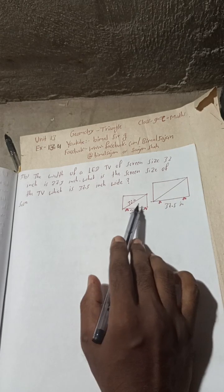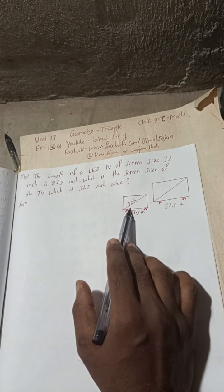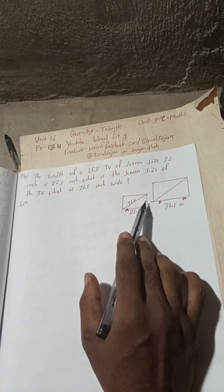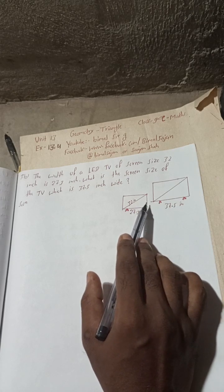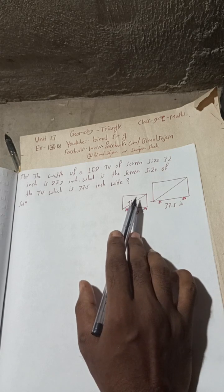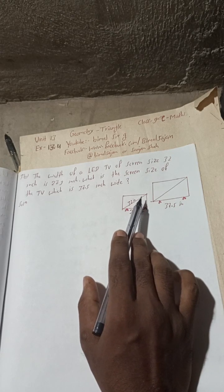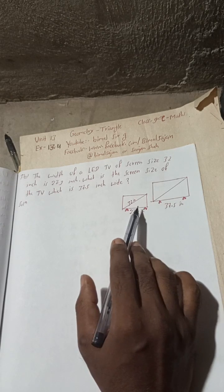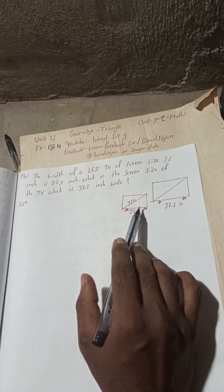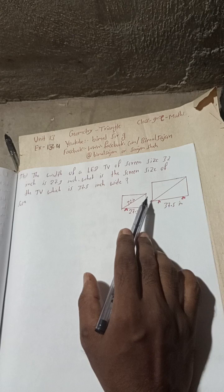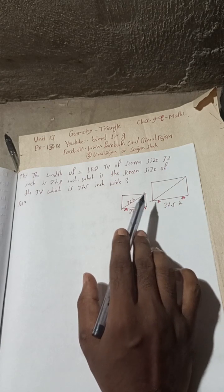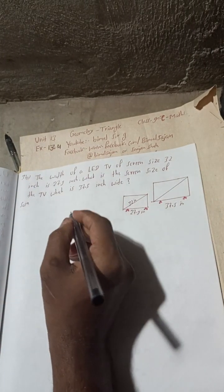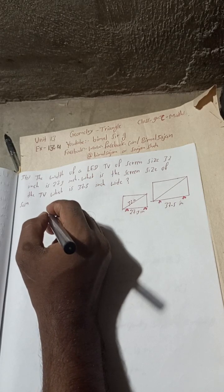In this case, what we can do is we should know the idea that whatever be the size of the TV, the width is proportional to the screen size. We can apply the logic of similarity triangles, but here there is no need. Just keep the concept that the ratio of width of the LED TV and the screen size will be same.